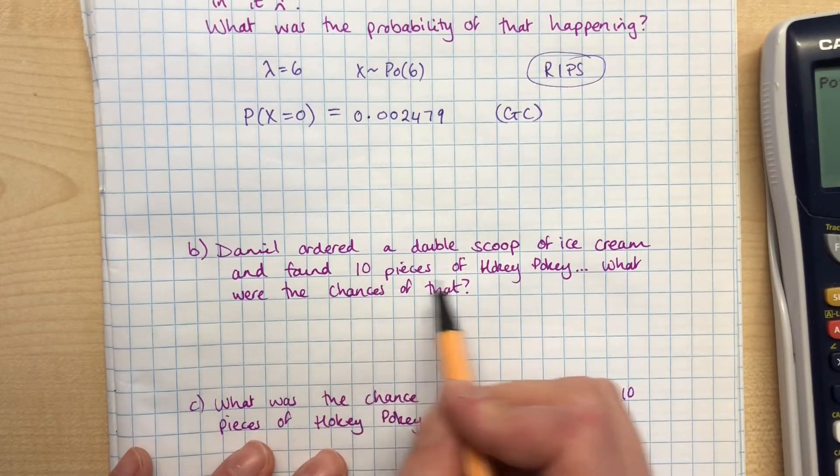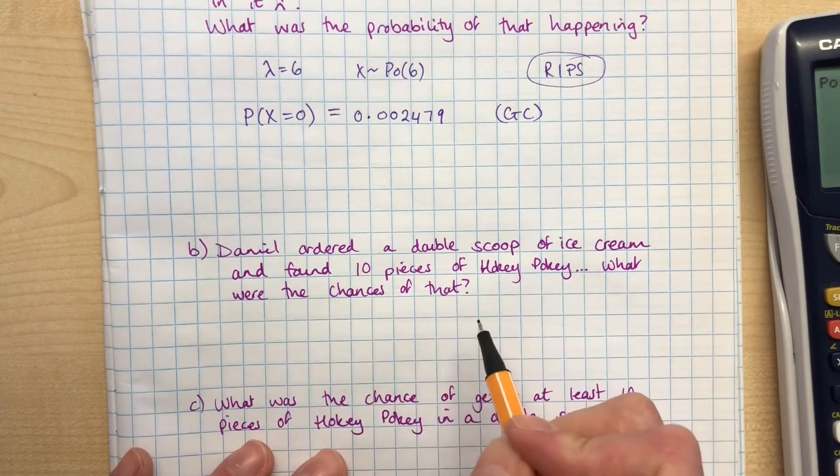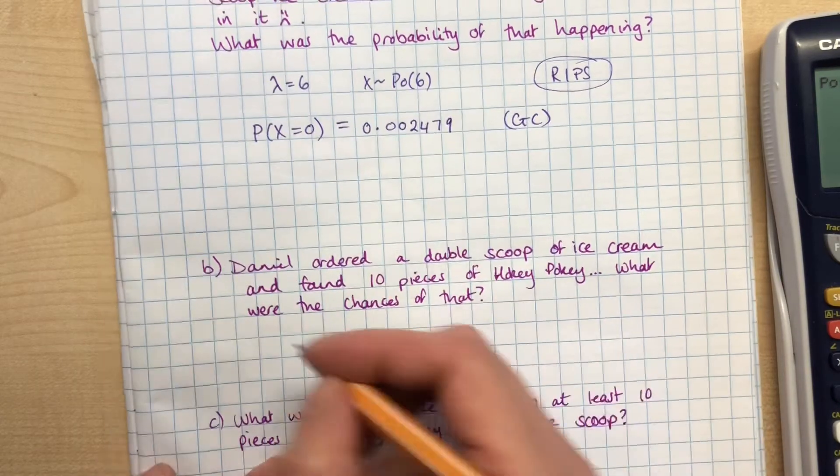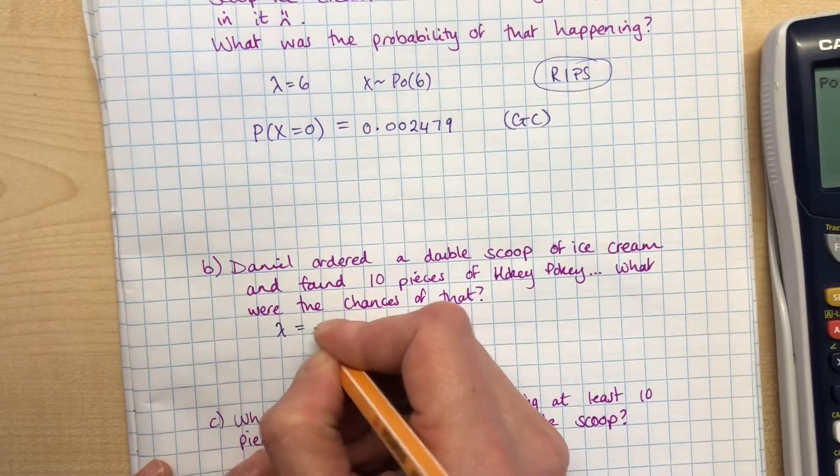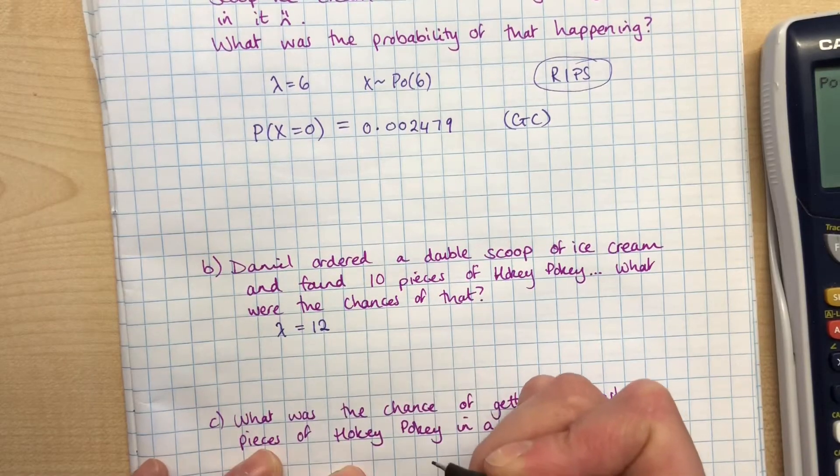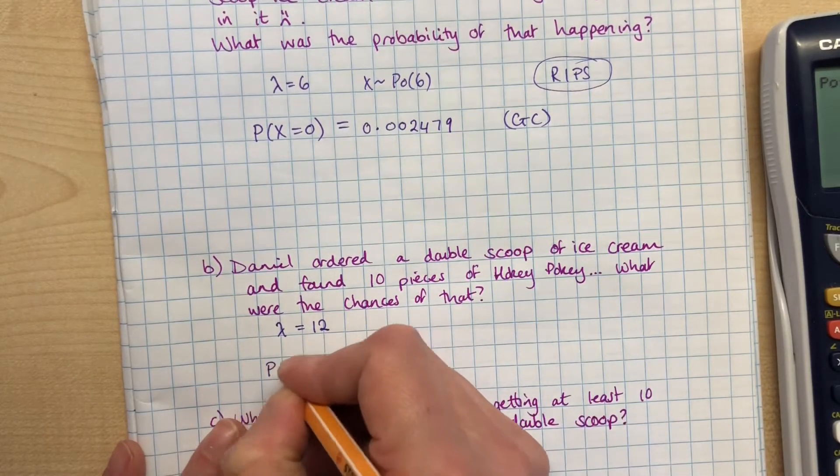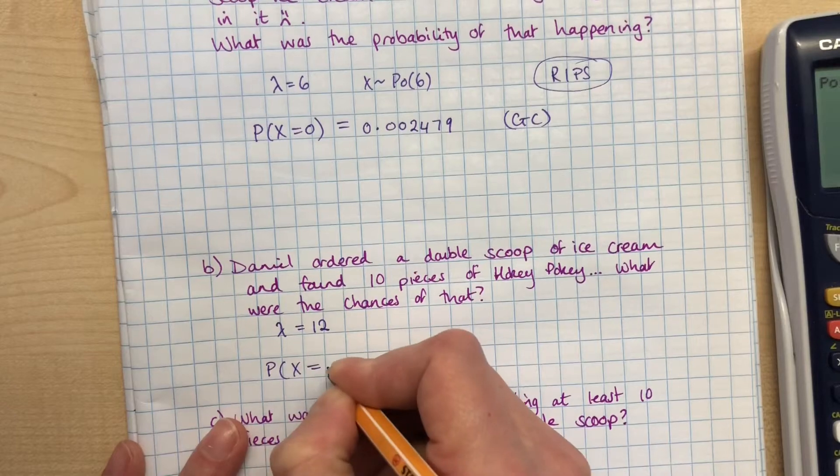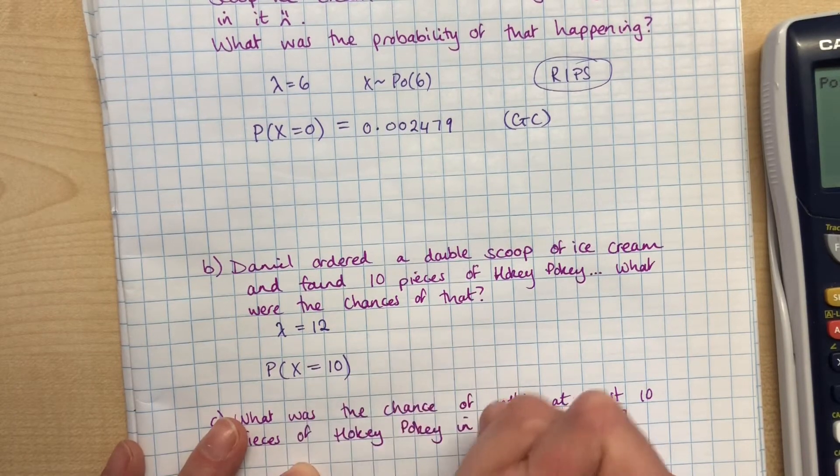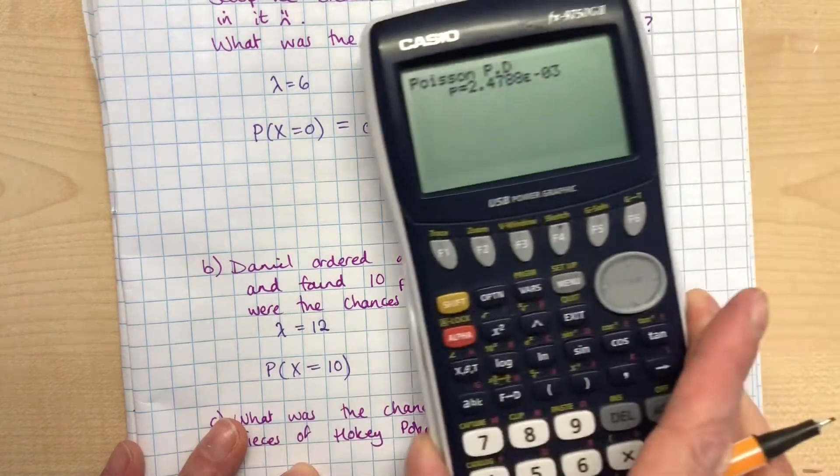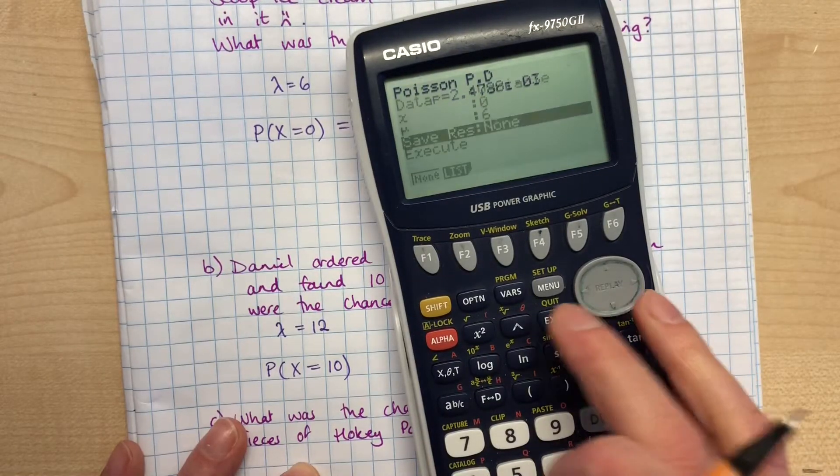All right, second question is that Daniel ordered a double scoop of ice cream and found 10 pieces of Hokey Pokey. What were the chances of that? So in a double scoop, lambda is going to be twice as big, so now we're going with lambda is equal to 12. What's the probability that we get 10 pieces in a double scoop?